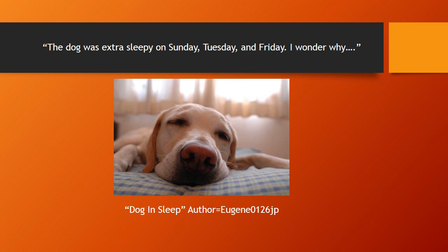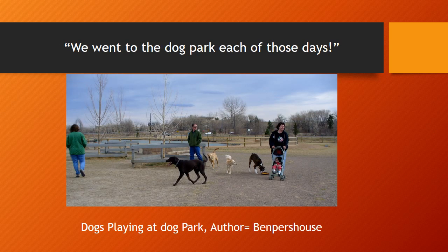I wonder why. In this case, the effect that I'm worried about is the dog being extra sleepy, and this effect is occurring on three different occasions: Sunday, Tuesday, and Friday. If I engage in method of agreement reasoning, I have to find other things that are also happening on Sunday, Tuesday, and Friday, and see if those things can account for the dog being sleepy. Let's say it's the case that we went to the dog park on each of those days. Now I've established a similarity between going to the dog park and the dog being extra sleepy on Sunday, Tuesday, and Friday. Let's say it's also the case that we did not go to the dog park on any of the other days of the week. So in that case, I can say that going to the dog park has probably made my dog sleepy. I have established an agreement between a cause and effect over multiple occasions.